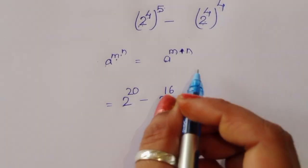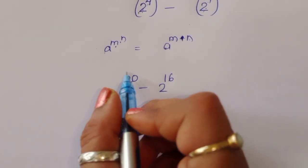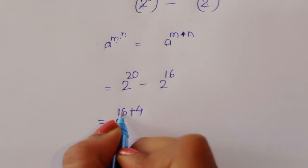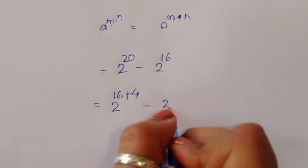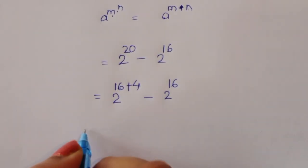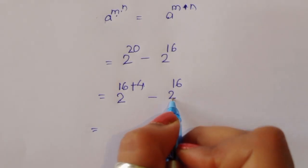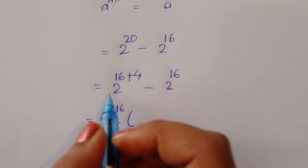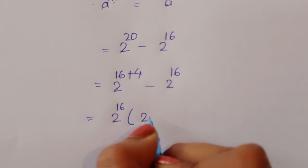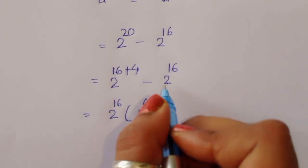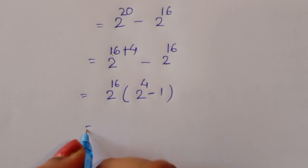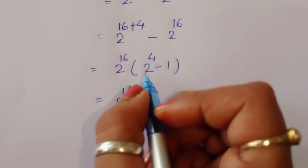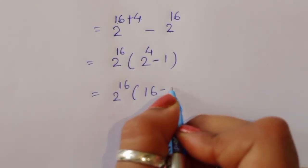Now we can convert 2 power 20 as 2 power 16 plus 4. So we have 2 power 16 plus 4 minus 2 power 16. Here 2 power 16 is common in both terms, so we can take 2 power 16 as common. We get 2 power 16 times 2 power 4 minus 1.